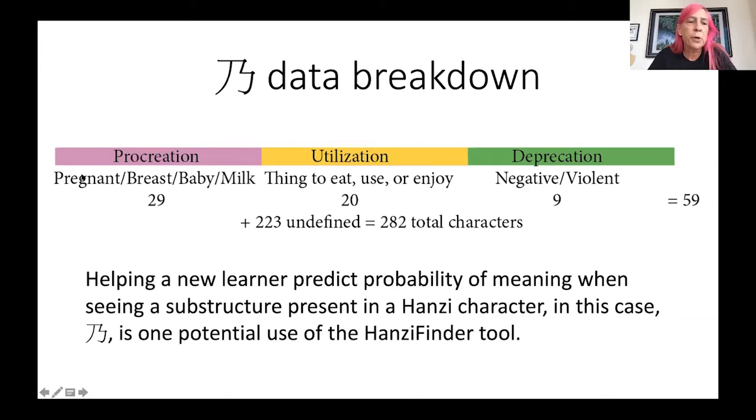So the data breakdown, we have procreation, pregnant breasts, baby milk, utilization, things to eat, use and enjoy, deprecation, negative or violent. And then we have a lot of undefined characters for a total of 282 characters. The g changes into nigh. Helping a new learner predict probability of meaning when seeing a substructure present in a Hanzi character, in this case nigh, is one potential use of the HansiFinder tool.